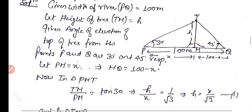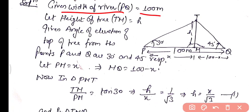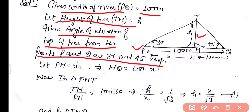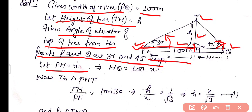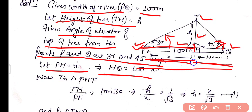Given: width of river PQ = 100 meters. Let height of tree TM = H. The angles of elevation from P and Q are 30° and 45° respectively. Let PM = X, so MQ = 100 − X since PQ = 100. In right-angle triangle PMT: TM/PM = tan30°, so H/X = 1/√3, giving H = X/√3 — equation 1.